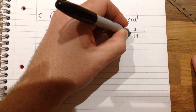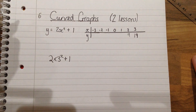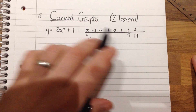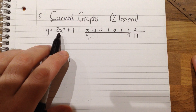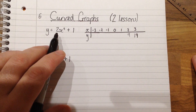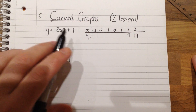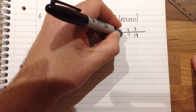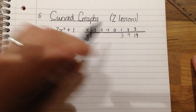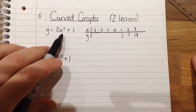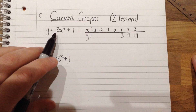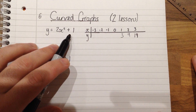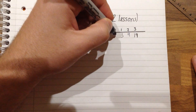So I'd put 9 just underneath the 2. If x was 1, we'd use the same process. x squared, so 1 squared is 1, times by 2 is 2, add on another 1 would give us 3. If x is 0, we would have 0 squared, which is 0, times by 2, that's still 0. Add on 1, that would give us a value of 1.